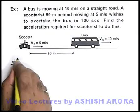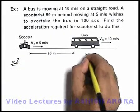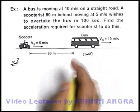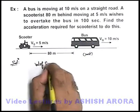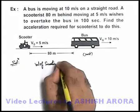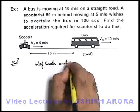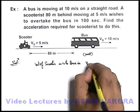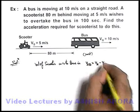Now in this situation, if we take the bus at rest, or we analyze the problem in the reference frame of the bus, we can simply write that the velocity of scooter with respect to bus can be written as v_s minus v_b.